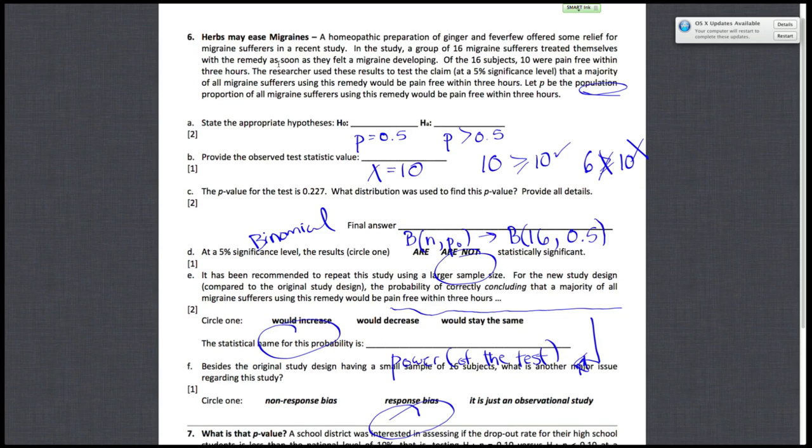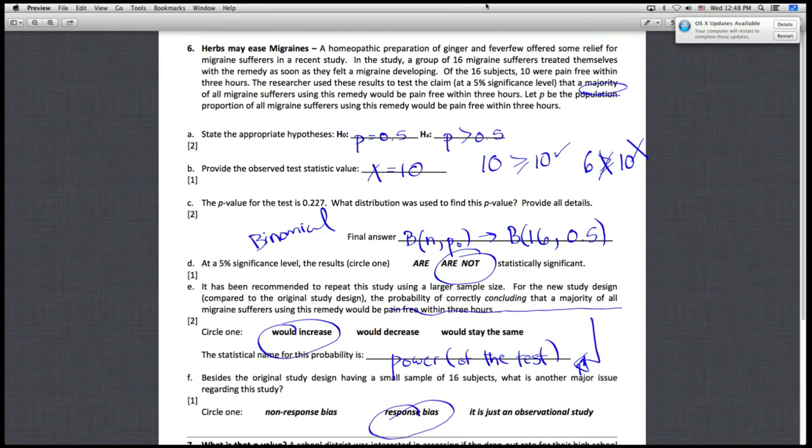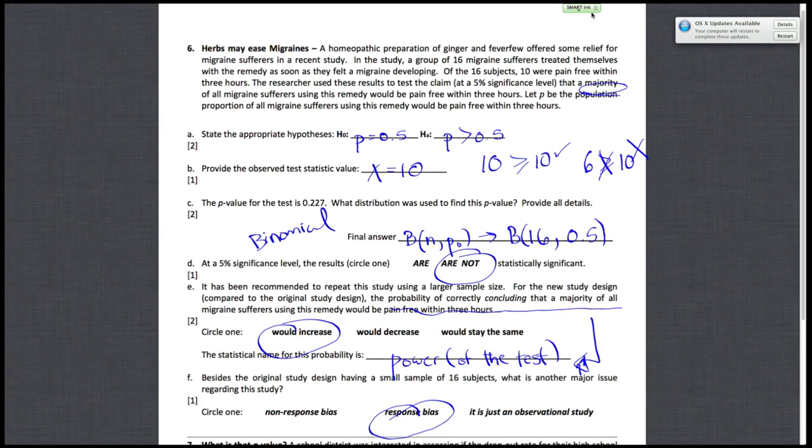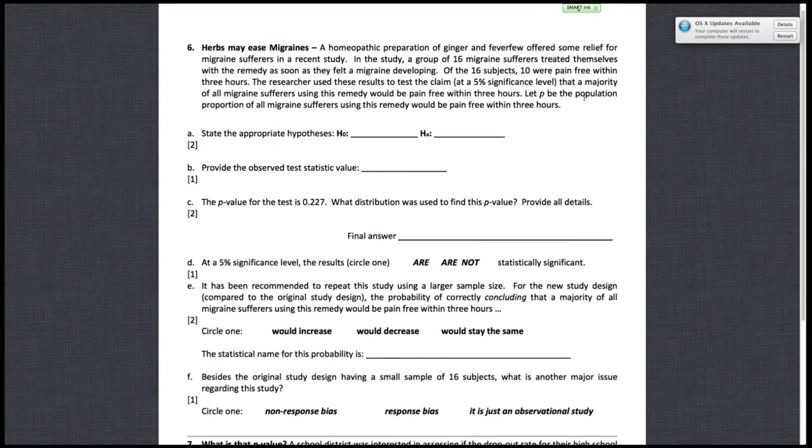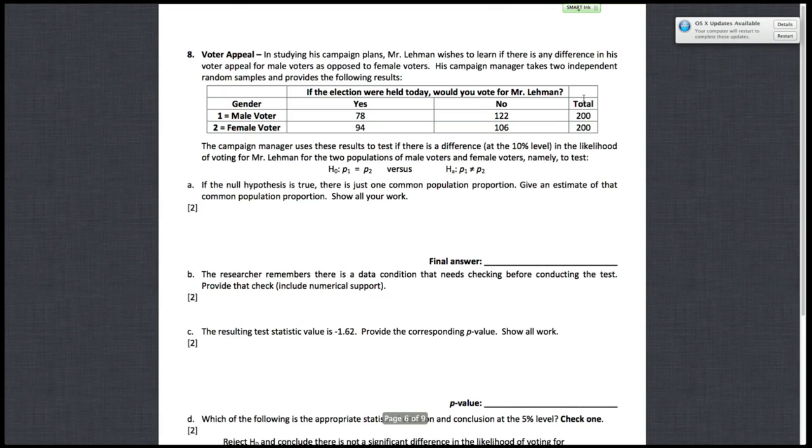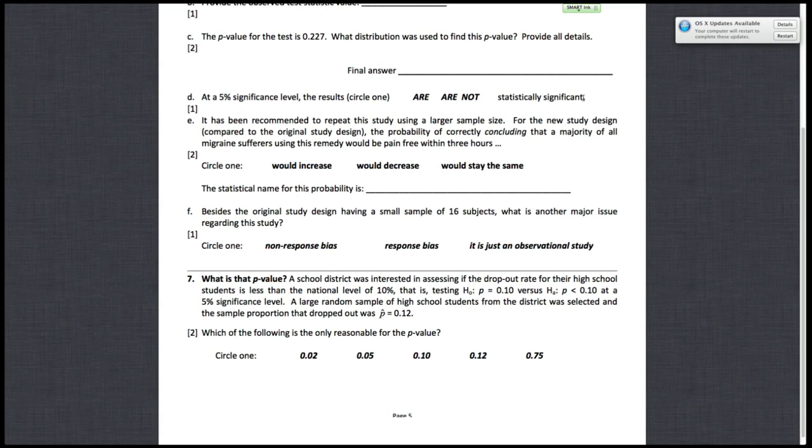All right, so moving on to question 7. What is that p-value? A school district was interested in assessing if the dropout rate for their high school students is less than the national level of 10%, that is testing p equals 0.1 versus p is less than 0.1 at a 5% significance level. A large random sample of high school students from the district was selected, and the sample proportion that dropped out was 0.12. Which of the following is the only reasonable value for the p-value?